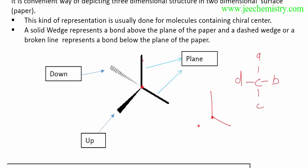One bond is on the downward backward side — away from the viewer — and this is shown as a dash. One bond is on the upward forward side — towards the viewer — and this is shown as a wedge.